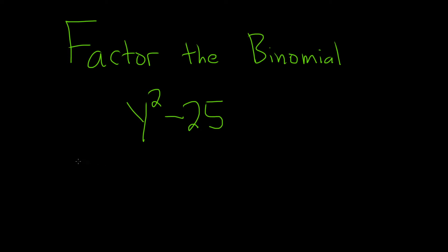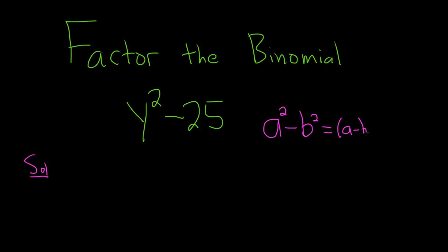Factor the binomial. Let's go ahead and work through this solution. There is a formula that we can use in this problem. The formula is called the difference of squares formula. It says if you have a squared minus b squared, that is equal to a minus b times a plus b.